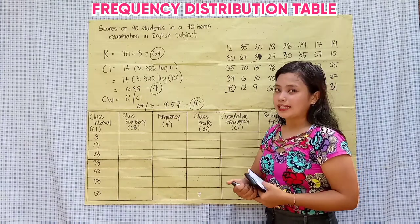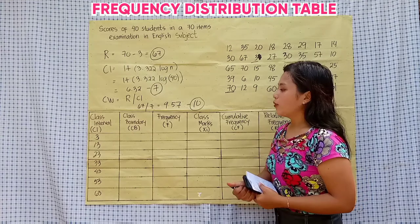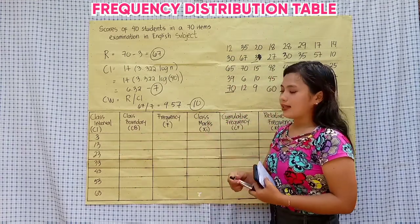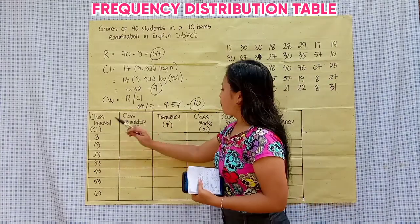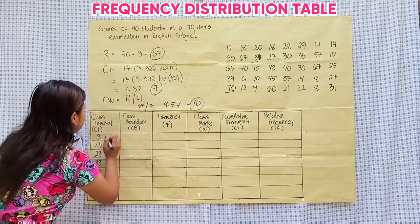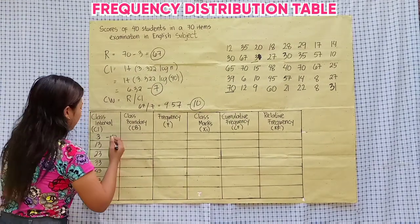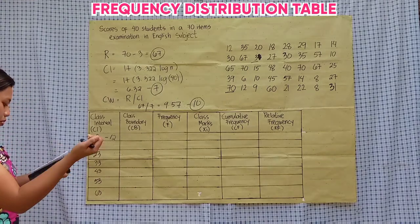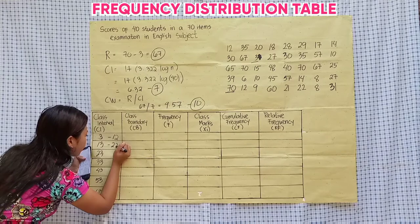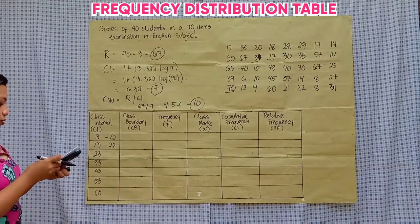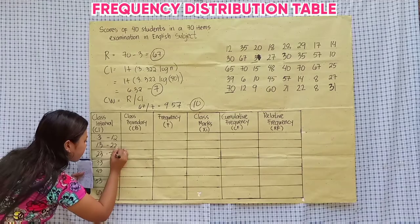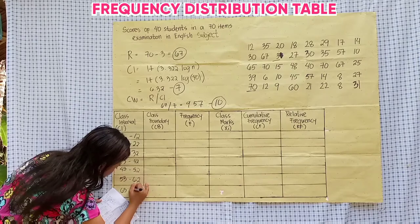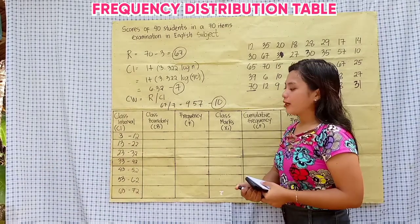Next is to find the upper class limit. To find the upper class limit, we need to add the lower limit plus the class width, then minus 1. For example: 3 plus 10 minus 1 equals 12, 13 plus 10 minus 1 equals 22, 23 plus 10 minus 1 equals 32, and so on. That is how to find our upper class limit, and we are done with our class interval.